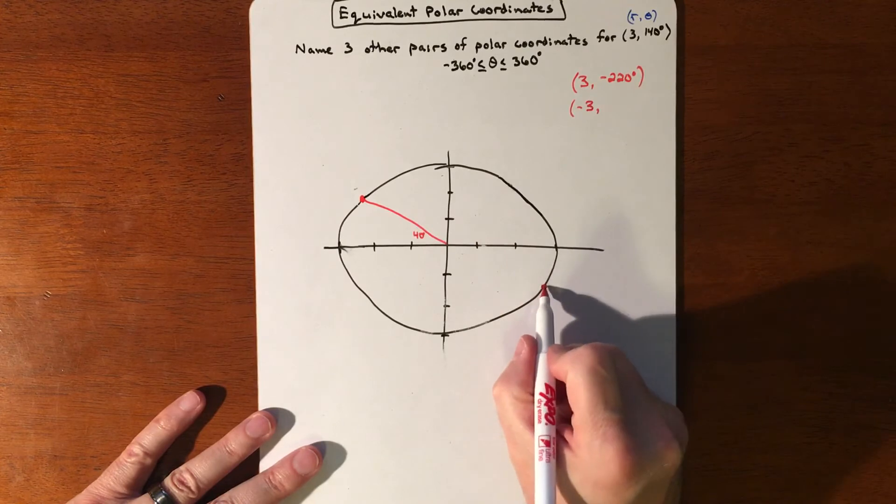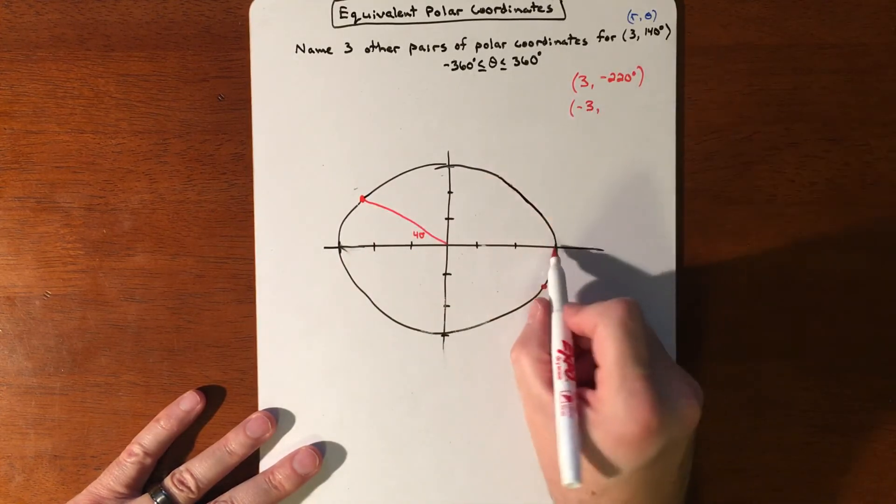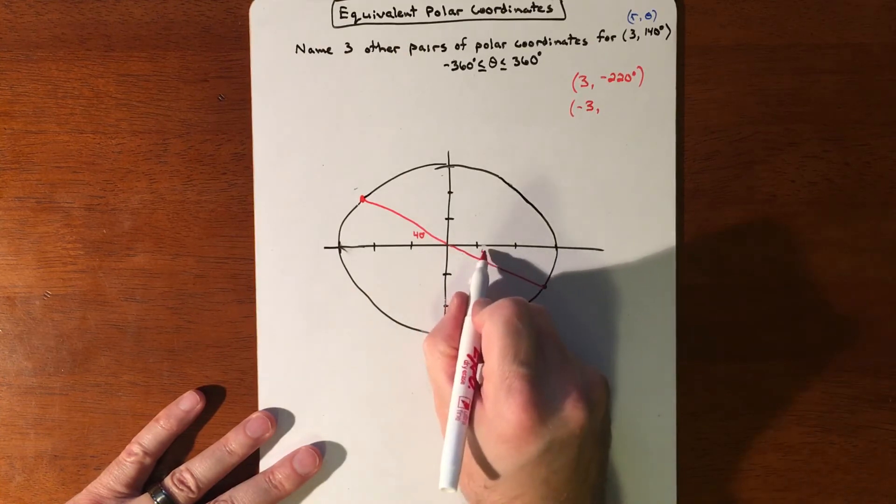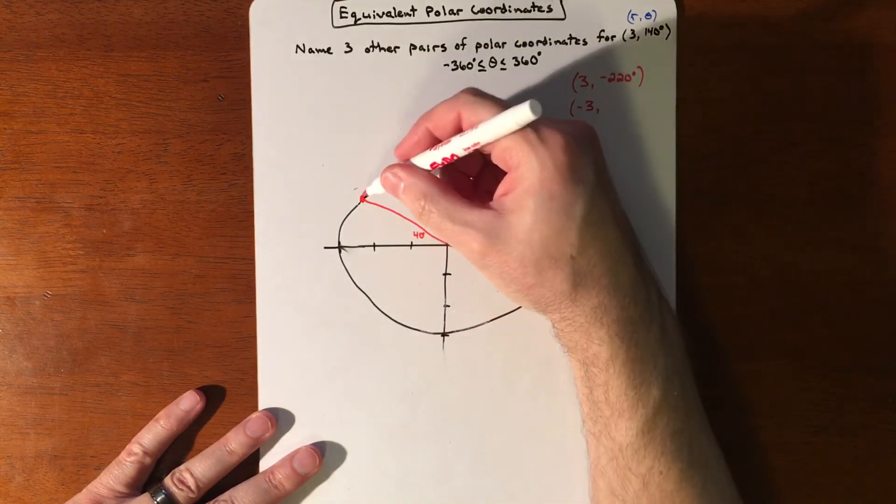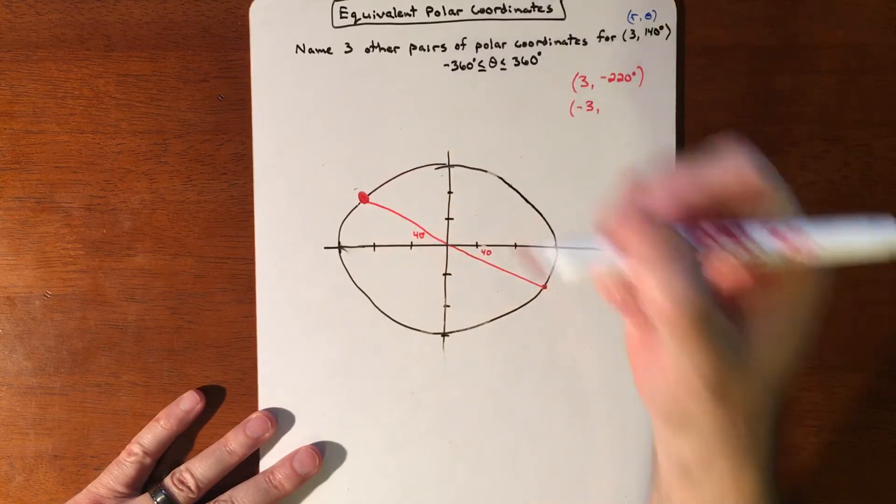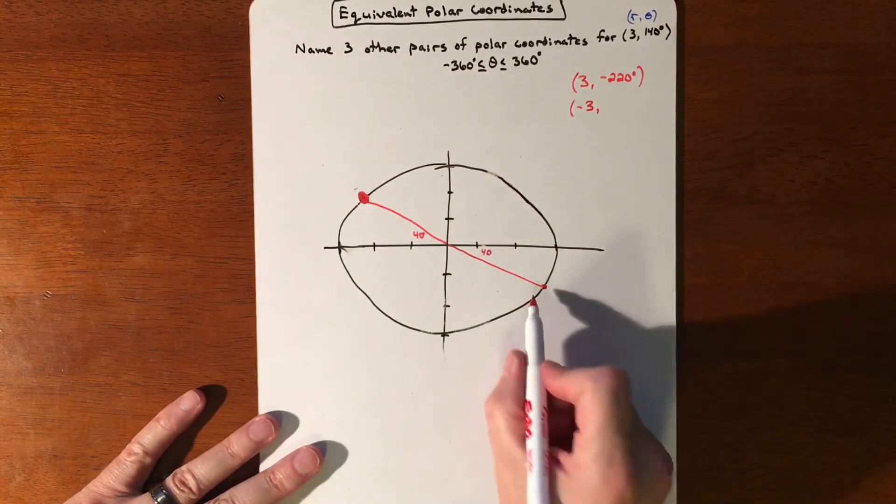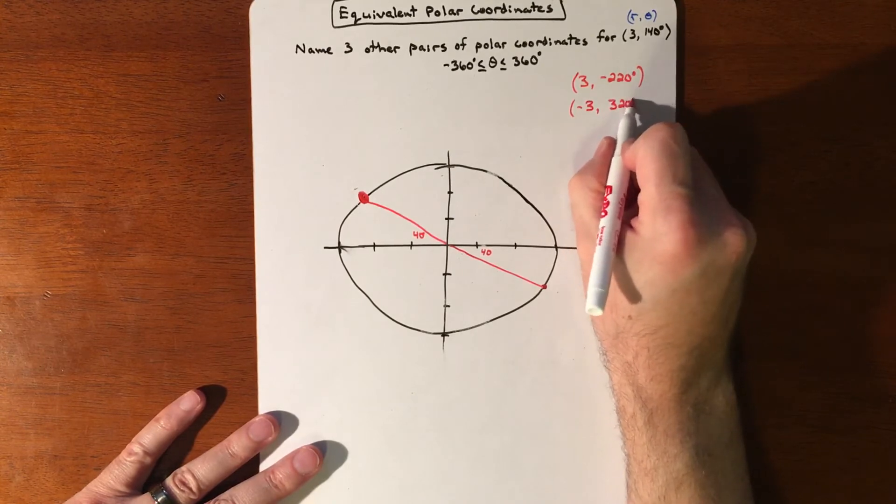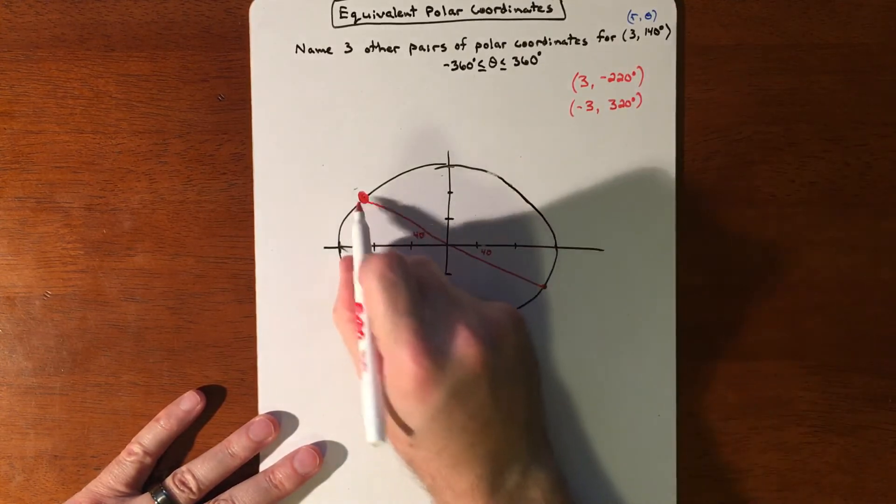So treating this as if this is your point and then we're going to reflect it because of the negative. To get here, you still have this same exact reference angle of 40. Let me make this the bigger point because that's our end point. So to get here, you're talking 320 degrees and then the negative radius reflects it over.